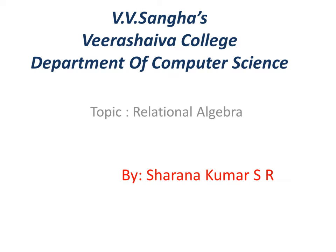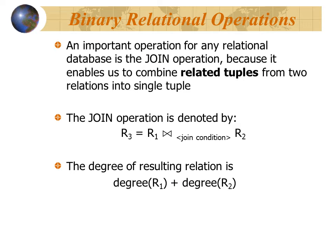Good morning everyone. Let's start the relational algebra operations continuation part. In the last video, we discussed different kinds of set theory operations with examples — union, intersection, set difference, and Cartesian product, which allows us to join attribute values from two different relations into a single relation. Today we are going to discuss one of the important topics: the join operation in DBMS.